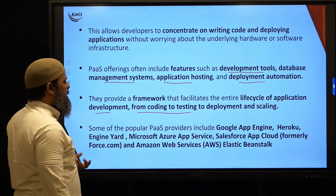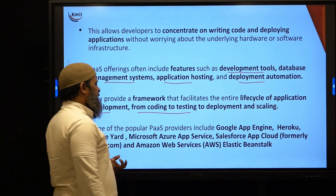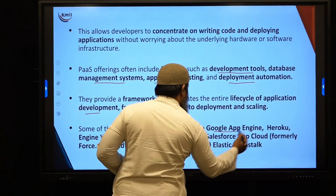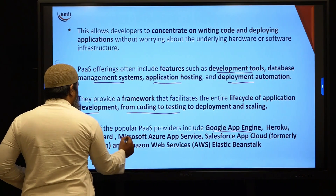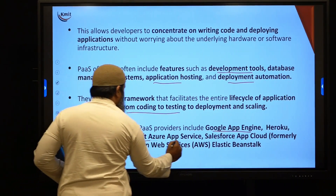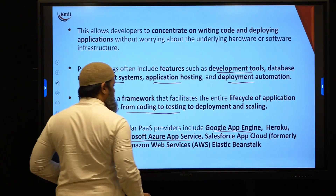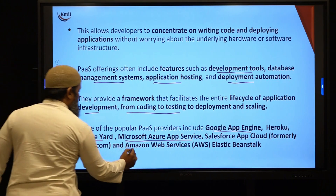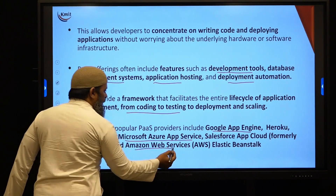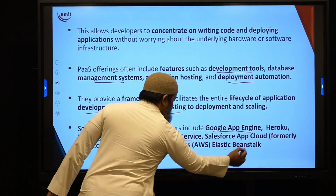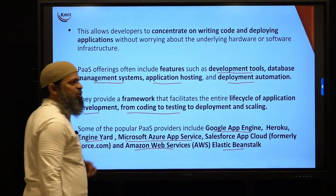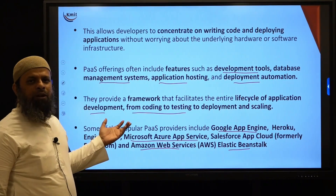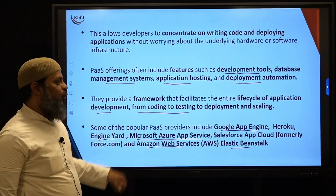The most popular PaaS providers include Google App Engine, Heroku, Engine Yard, Microsoft Azure App Service, Salesforce App Cloud, and Amazon Web Services Elastic Beanstalk. These are all PaaS services provided by different cloud networks.